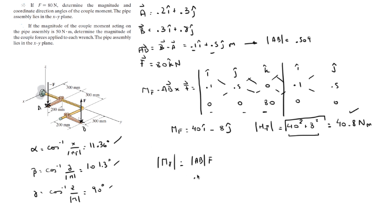So, the magnitude is 0.509, they're telling you that the moment is going to be 50, find F.